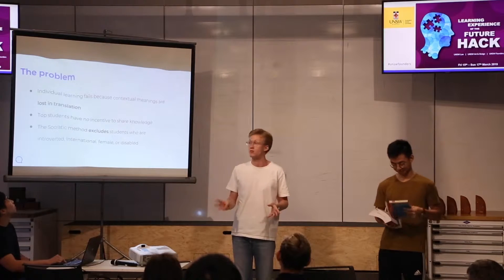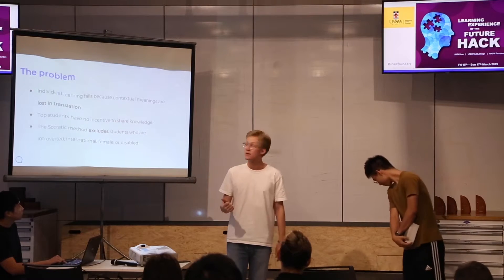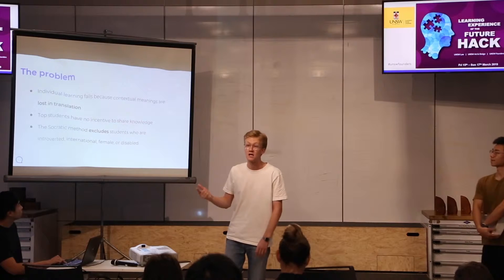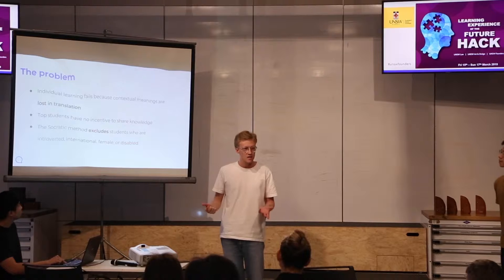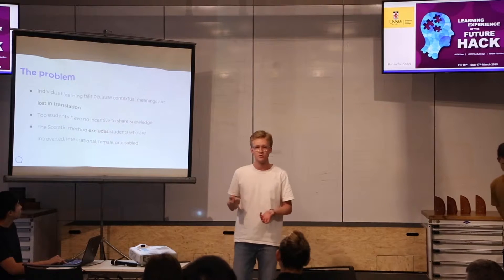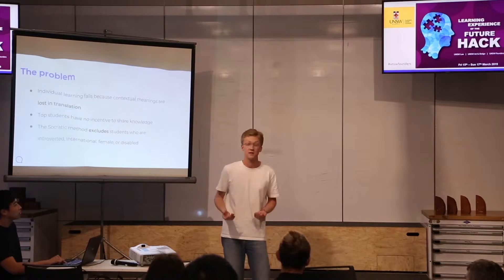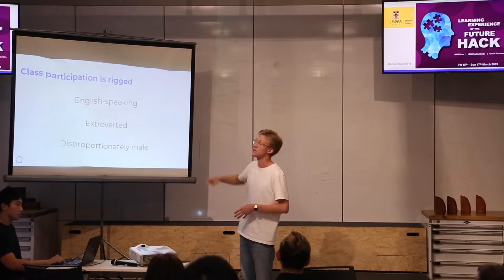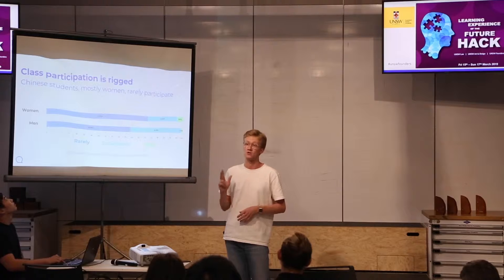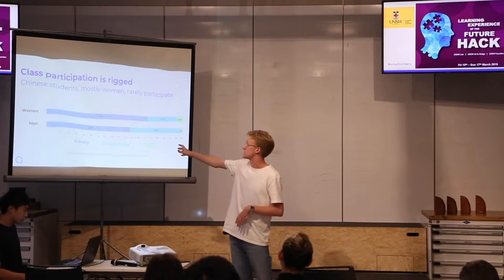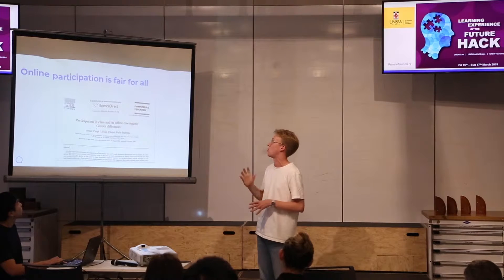The problem is essentially threefold. Struggling students work overtime trying to go it alone. Top students and their classmates have no incentive to help out. And the class participation system, the one that's supposed to fix this, actually excludes students who are introverted, from international backgrounds, have disabilities, or who are female. Basically, class participation is rigged for English-speaking, extroverted, and disproportionately male students. From our survey, Chinese students, and mostly women, rarely participate in class at all.